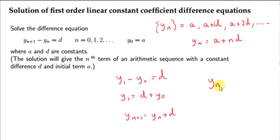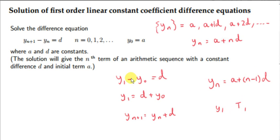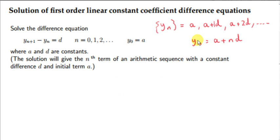We need to be careful: traditionally we might see a formula where the first term is y₁, but here the first term is y₀. We need to allow for that, so we need 0·d when n=0 to get a. The formula is y(n) = a + n·d. Now let's get this result using z-transforms.